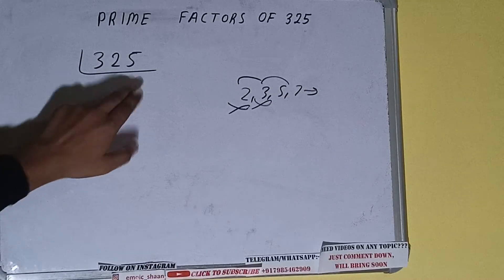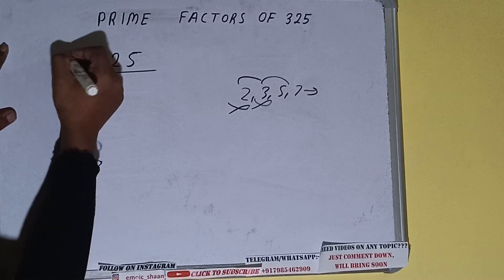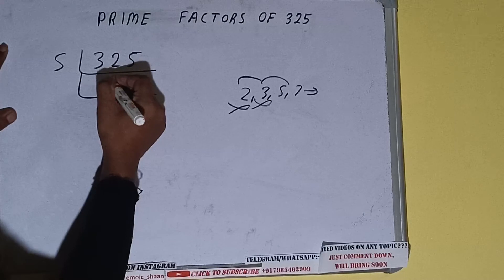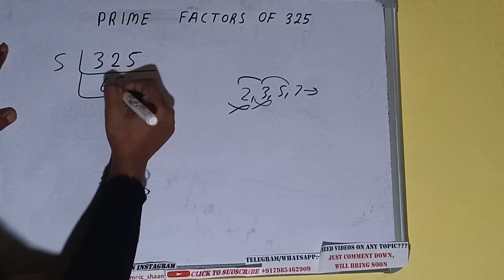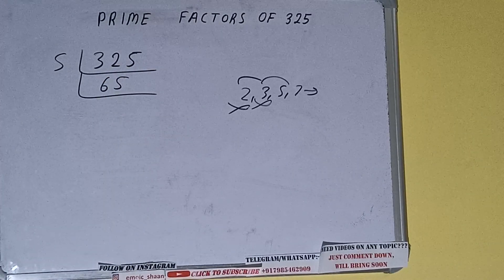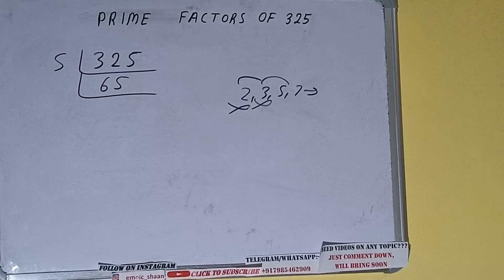Let's check with 5. The last digit is 5, so it is divisible by 5, and we'll be having 65. 5 into 25, we'll be having 65. 65 divided by 5: the last digit is 5, so yes it is, and we'll be having 13.